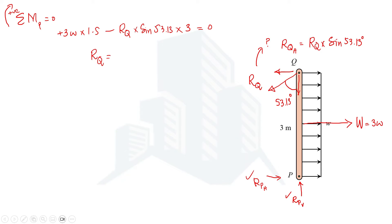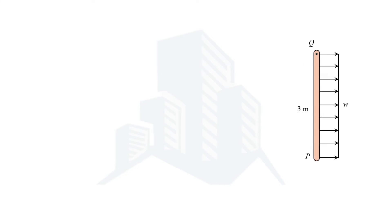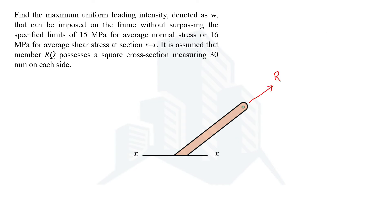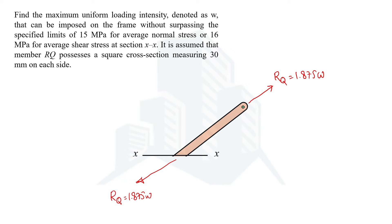From this equation, we can find the value of RQ in terms of W, which comes out to be 1.875W. Now jumping back to the previous figure — at the cross-section XX we have been given the normal and shear stress. We now know the force acting through the RQ member in terms of loading intensity. Considering the RQ member, the reaction at Q is 1.875W, so for balance there must be an equal and opposite force of 1.875W at the section.